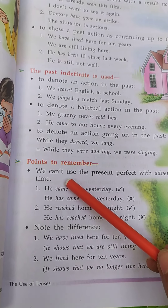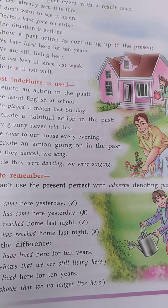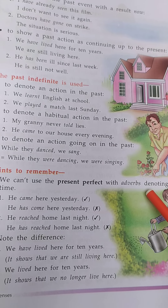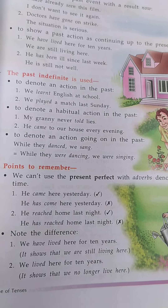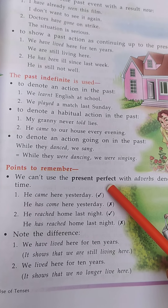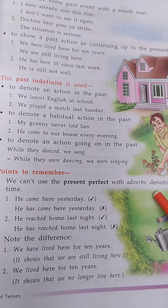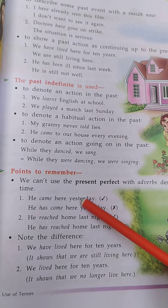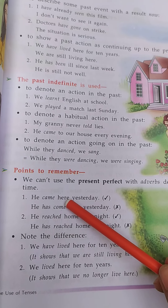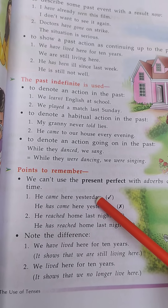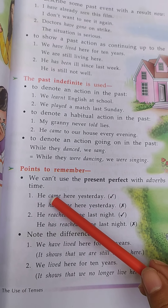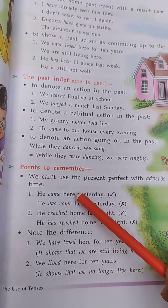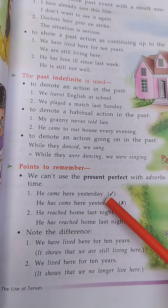Points to remember: we cannot use the present perfect with adverbs denoting past time. हम present perfect tense को कभी ऐसे adverb के साथ यूज़ नहीं करेंगे जो adverb past time को show करते हैं। Example number one: he came here yesterday — this sentence is correct. इस sentence में came जो verb है वो come verb का V2 form है, और यह past indefinite tense में दिया गया है। इसलिए इस sentence correct है।